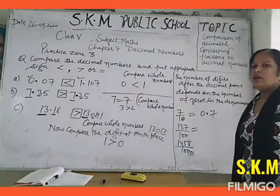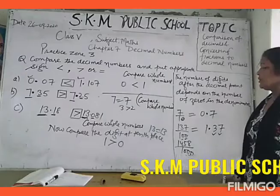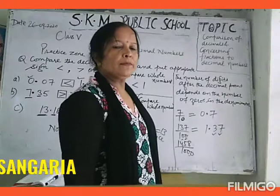137 upon 100: there are two zeros in the denominator, so two digits will come after the decimal — it will become 1.37. After the decimal there will be two digits because in the denominator it is 100, and the number of zeros in the denominator are two.